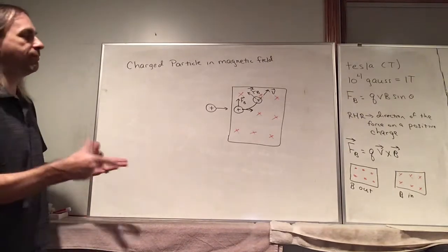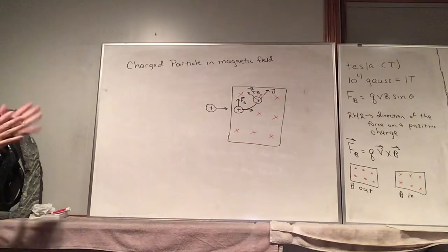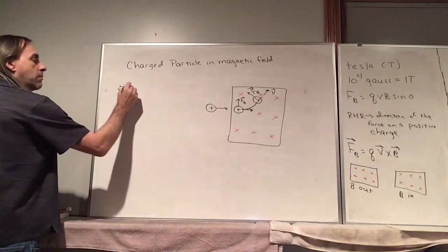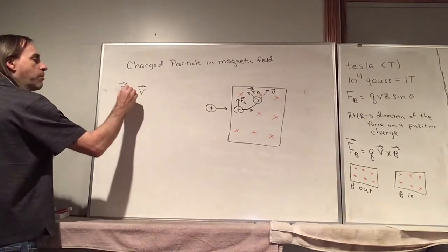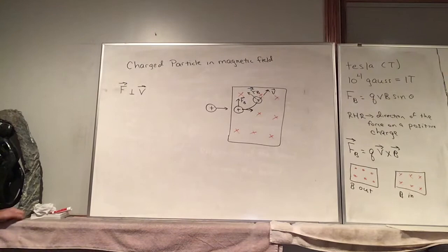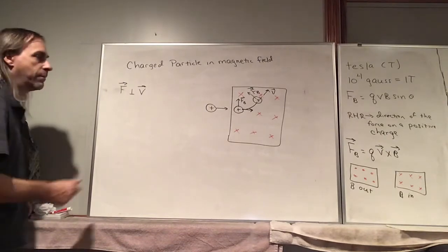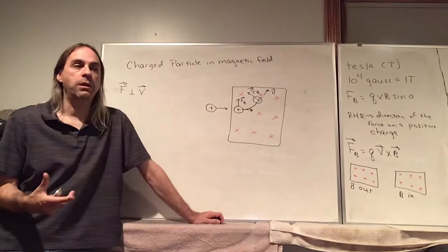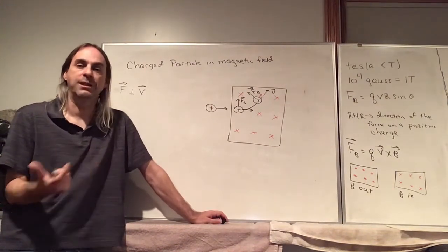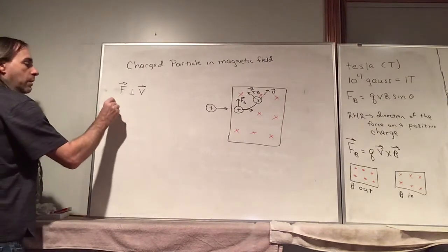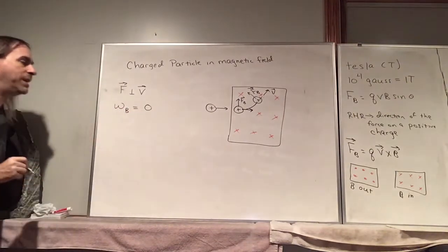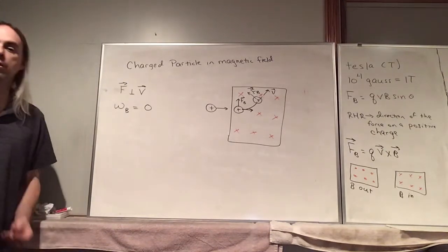Two very important facts: first, the force is always perpendicular to the velocity. Second, let's calculate the work done by the magnetic force. From the basic definition of work, if the force is perpendicular to the displacement, the work done by that force is zero. So the work done by magnetic fields is always zero — magnetic fields never do work.